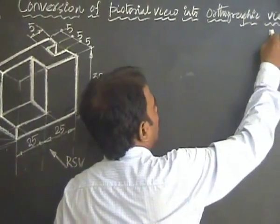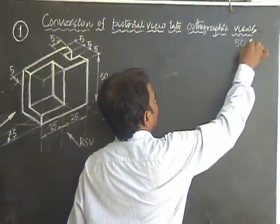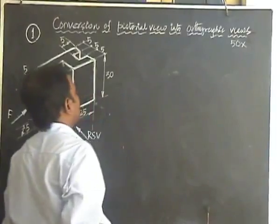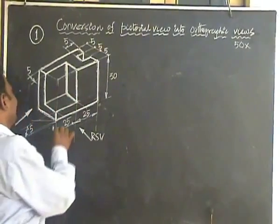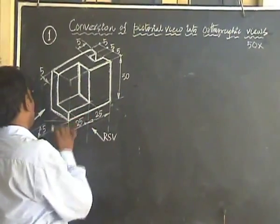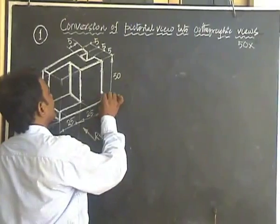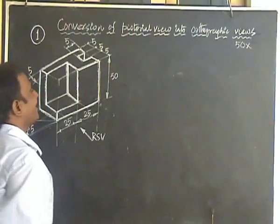Take the overall length as 50. Now you see you have the height. Here the smaller height is 5mm. Here it is 30. So the overall height is 30.